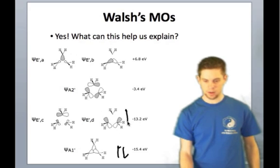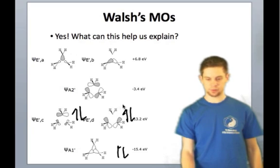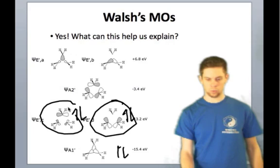Two in the very bottom orbital, and then two each in these degenerate orbitals here. So in other words, the highest energy orbital containing electrons are either this one or this one.